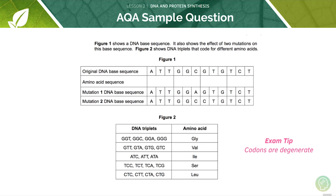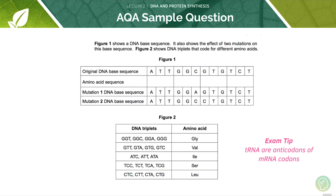The mutation has been silent in this case — it has no effect on the overall polypeptide. DNA has ATCG and RNA has AUCG. Remember that DNA doesn't have uracil and RNA doesn't have thymine. Also remember that tRNAs have anticodons — you may be asked to give the mRNA codon and state the complementary tRNA anticodon. If the mRNA codon is GCA, then the tRNA anticodon is CGU. Codons contain three bases, and you can work out the amino acids produced by looking at the bases in sets of three.